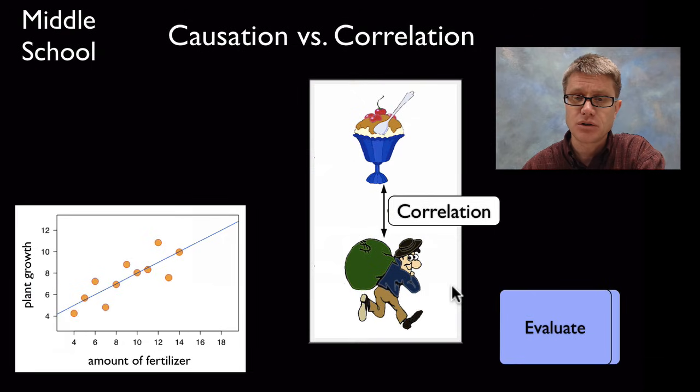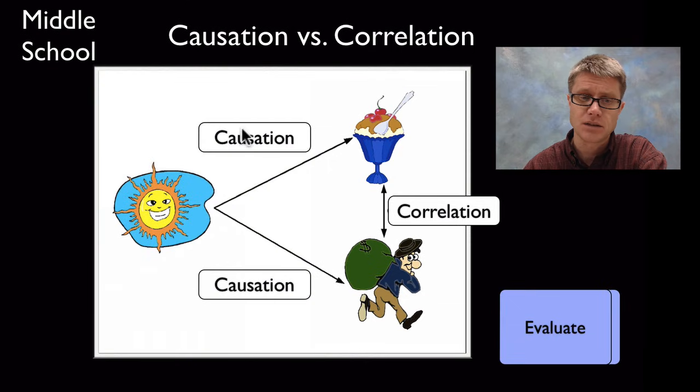And this is a good example you could share with your students. Scientists find that there's a definite correlation between the amount of ice cream that people eat and the amount of crime that is done in an area. So if you were to graph it you would find that ice cream versus crime is going to be a nice kind of a relationship like that. It's correlation though. It doesn't mean causation.